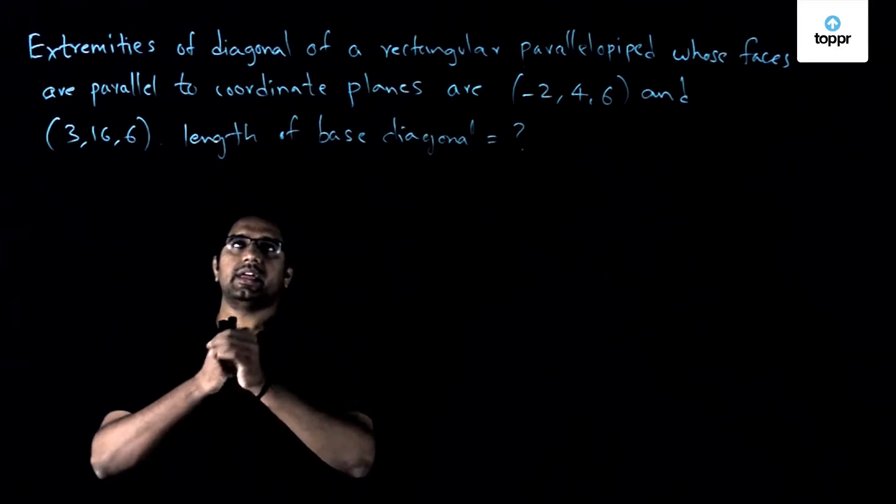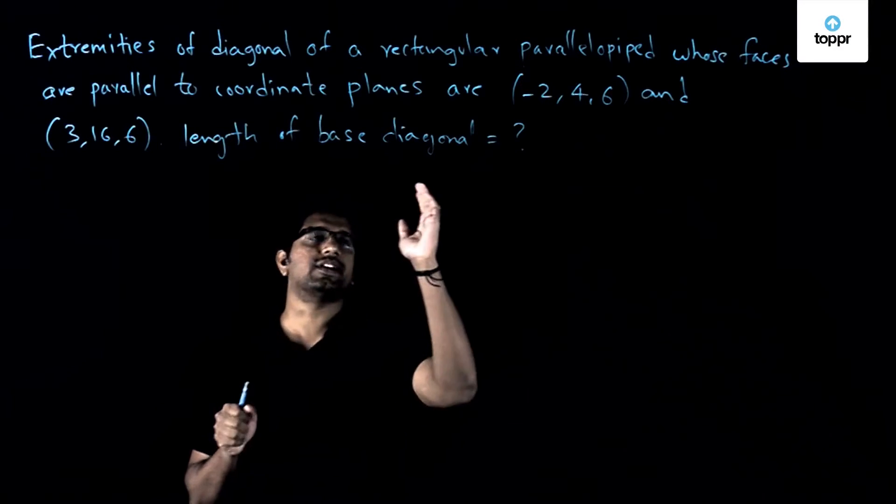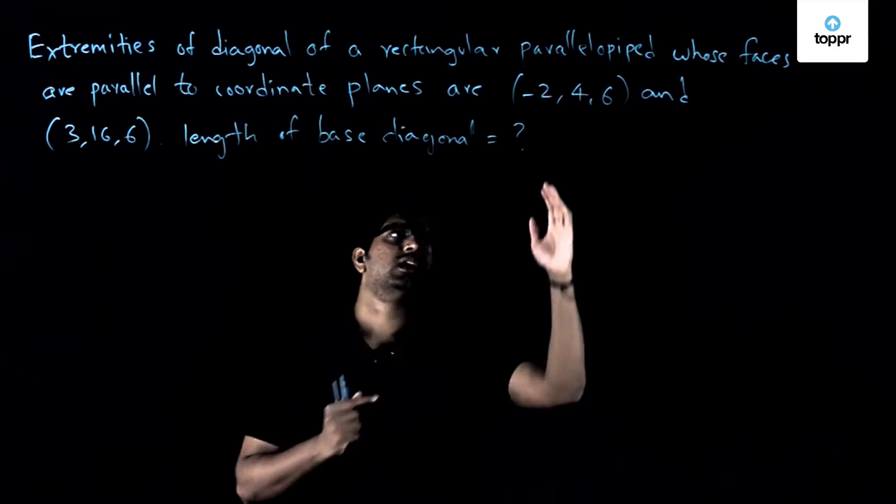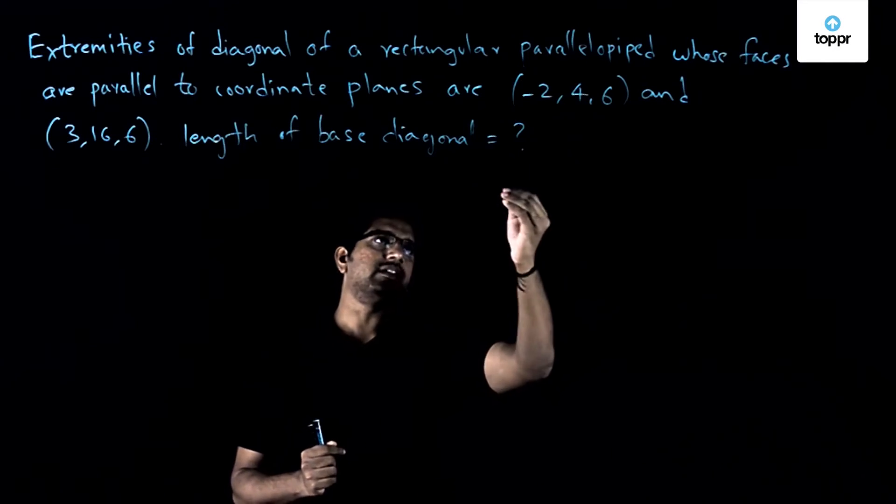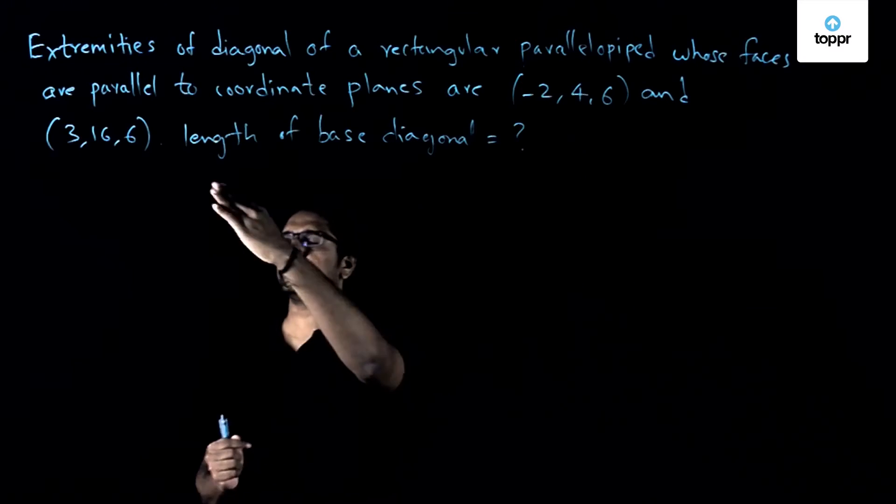In this problem, we have given that the extremities of the diagonal of a rectangular parallelepiped whose faces are parallel to the coordinate planes are (-2, 4, 6) and (3, 16, 6).